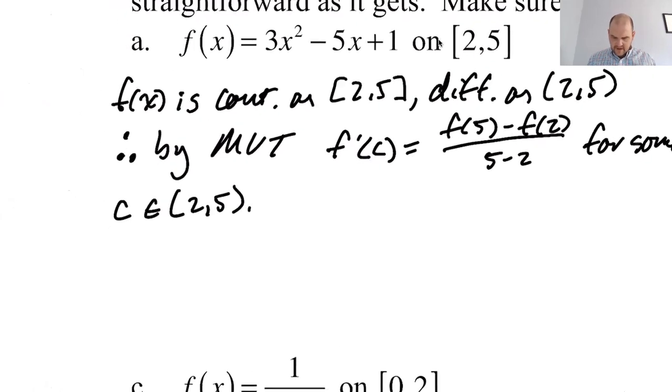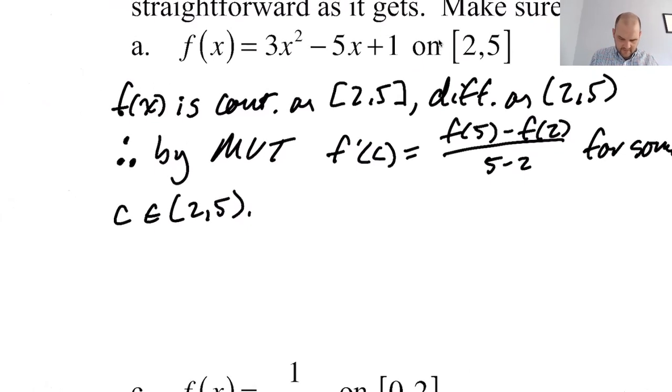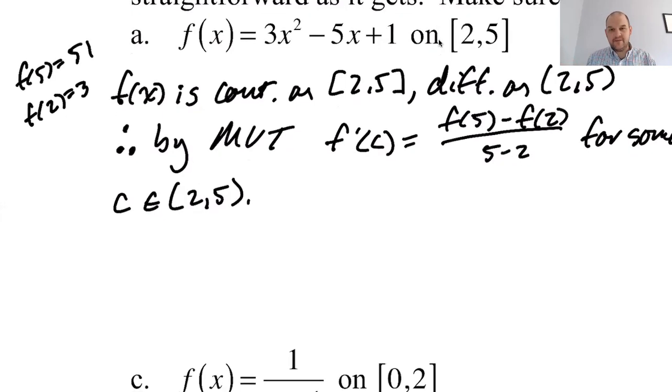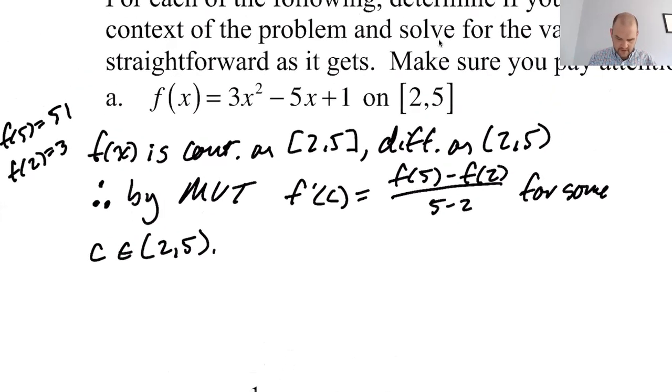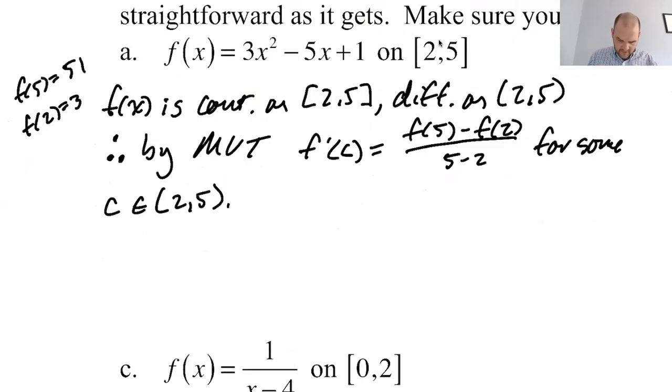So let me work out f of 5. f of 5 is 25, 75 minus 25 is 50, 51. And then f of 2 is 12 minus 10 is 2, so 3. f of 2 is 3. So we get, it's really not that bad.